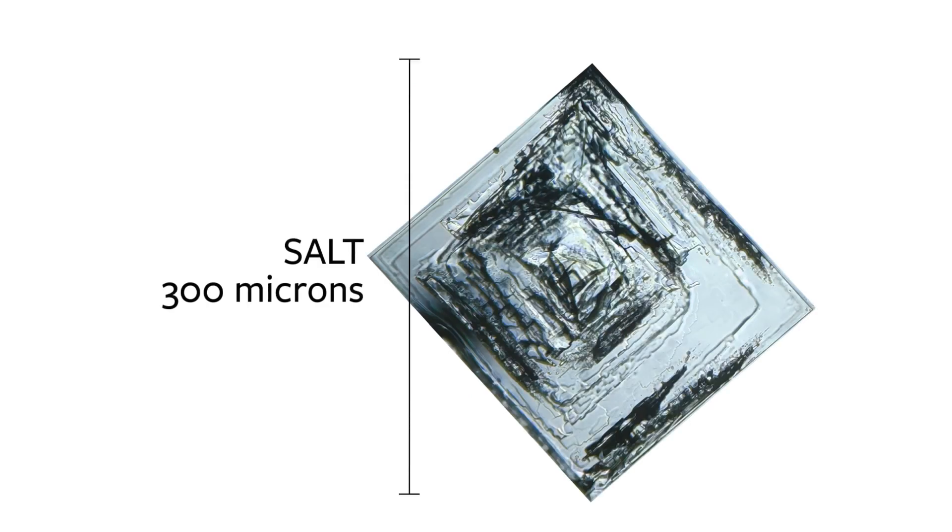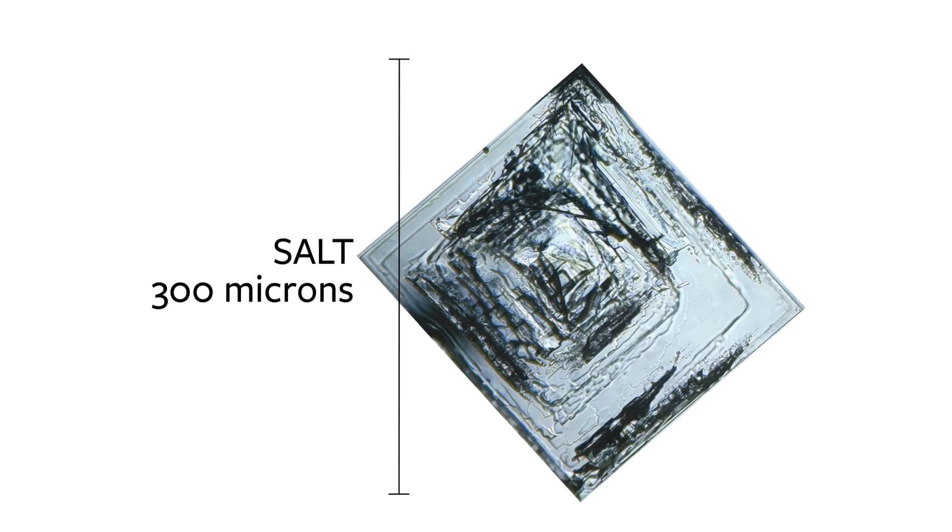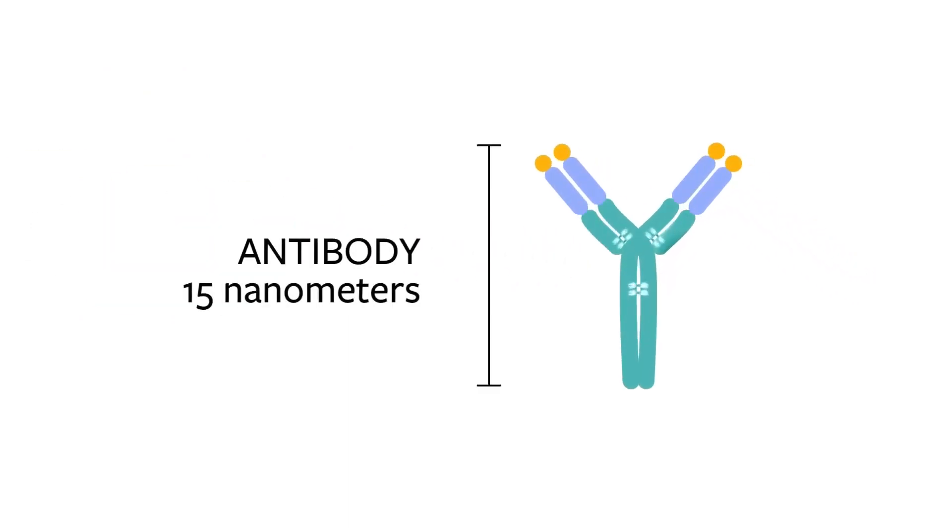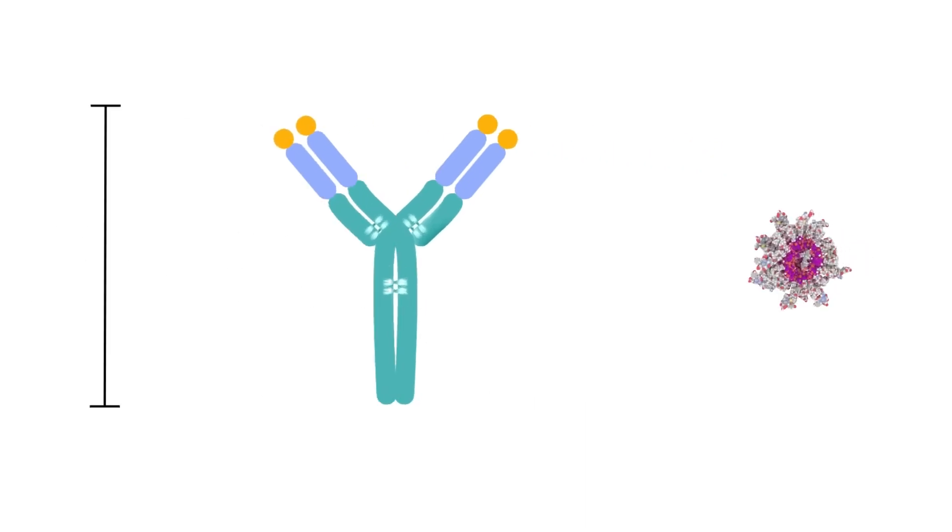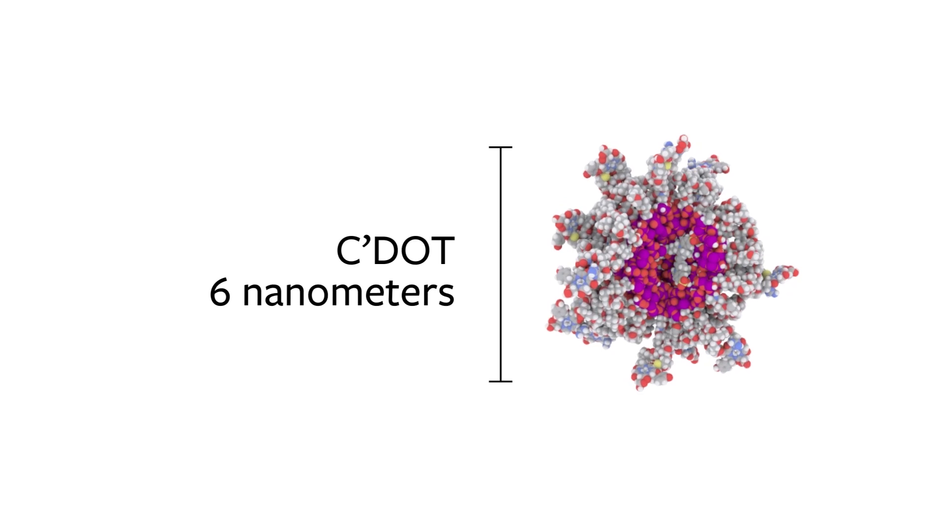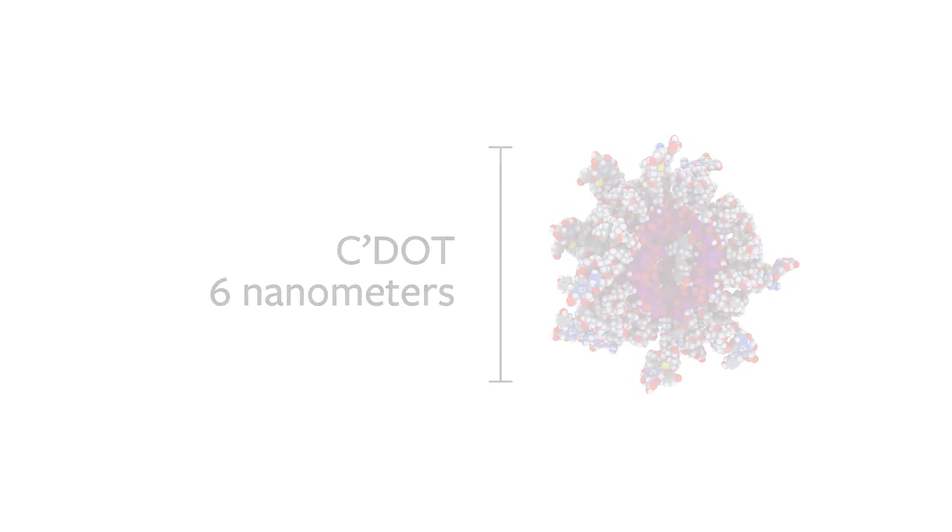This grain of salt is 300 microns wide, but to view a CDOT, we need to go tens of thousands of times smaller. Smaller than this red blood cell, smaller than this antibody used in some cancer therapies to carry drugs. And here we reach our CDOT at around just 6 nanometers in size.